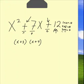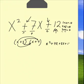Now we'll check this out. x times x is x squared, x times 4 is 4x, 3 times x is 3x, and 3 times 4 is 12.